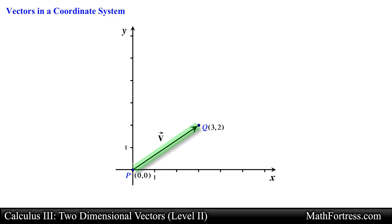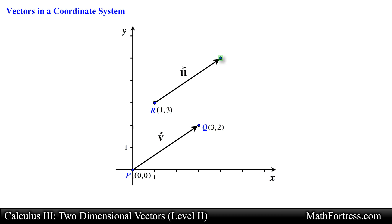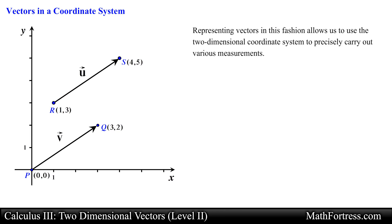For example, vector v can be represented by a directed line segment that starts at the origin and ends at a point — let's denote these points as p and q respectively. In the same manner, we can represent vector u by a directed line segment that starts at a point and ends at another point, denoted as r and s respectively. Notice that we can now describe the initial and terminal points of a vector by making use of ordered pairs in a two-dimensional coordinate system.